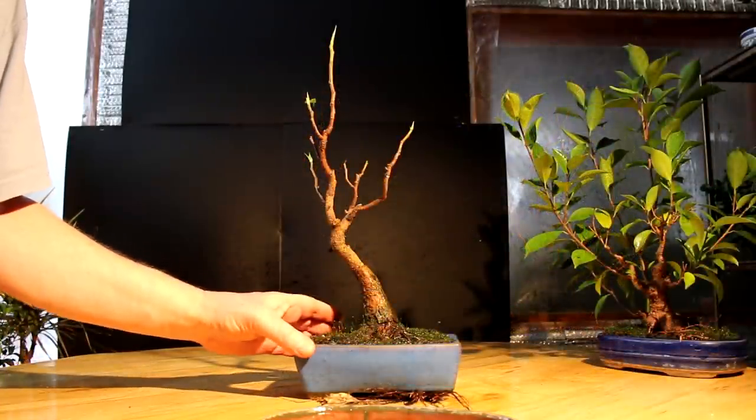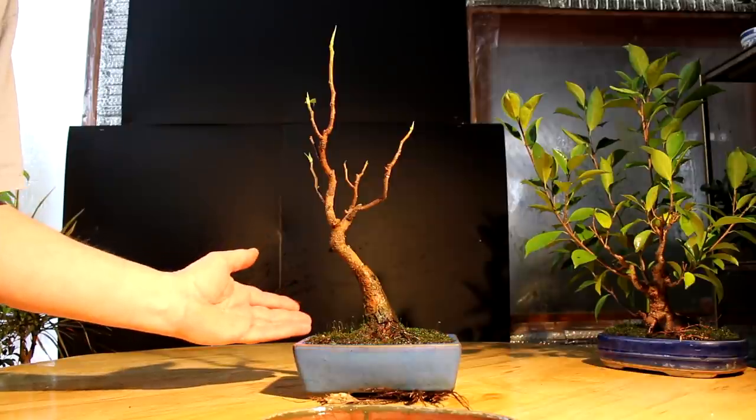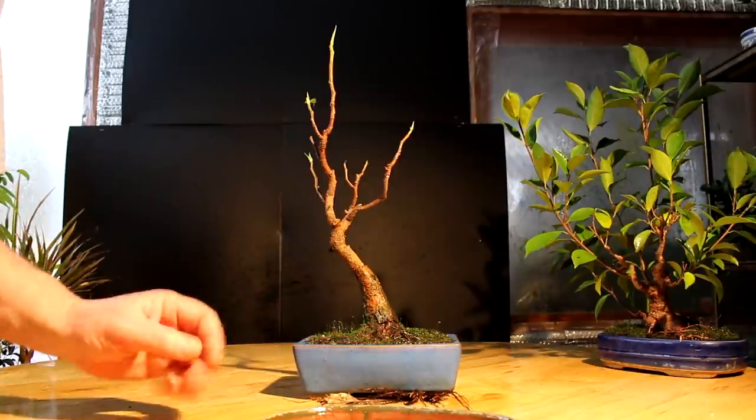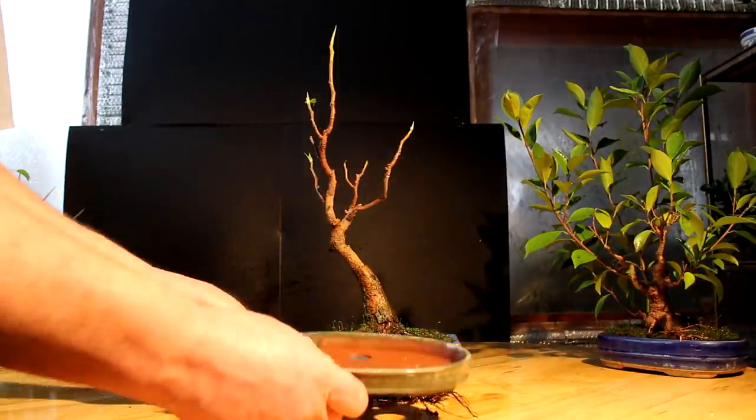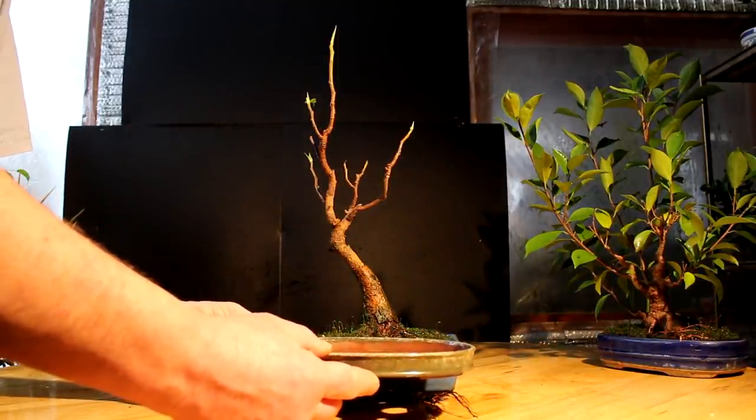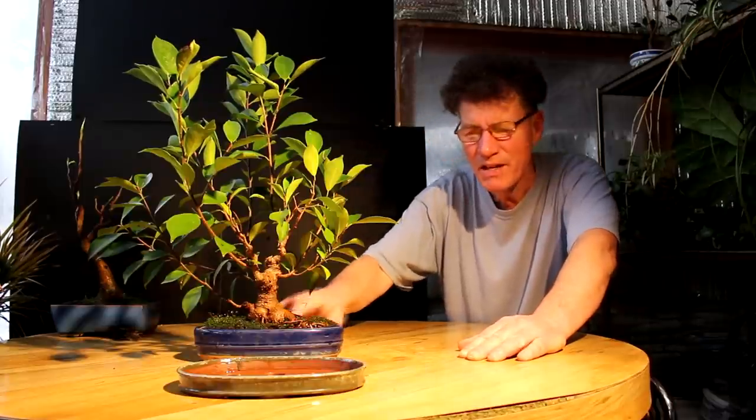The present pot that the ficus religiosa is in looks good. There's nothing wrong with it but it doesn't look very miniature. It looks like a pot of about this size. I think if I got it into a shallower oval pot it would look more like a giant tree. The pot that the ficus cutting of a cutting is in is not a bad sized pot but the color doesn't do anything for the tree so it too would look better in the shallow oval pot.